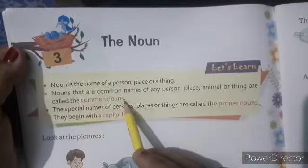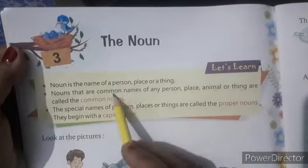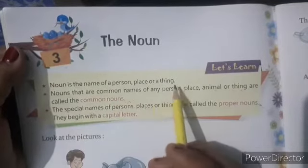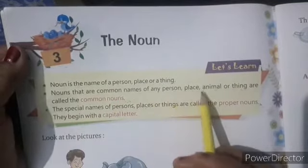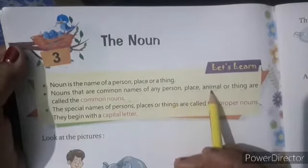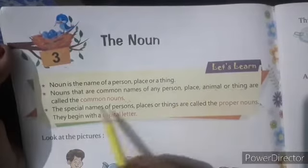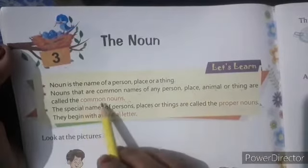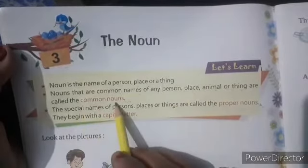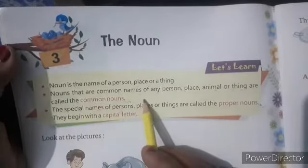Nouns that are common names of any person, place, animal or things are called common noun. SANGYA NAAM wale koi bhi vyakti, sthan, janwar aur vastu wale jo naam hota hai, voh kehlate hai common noun.